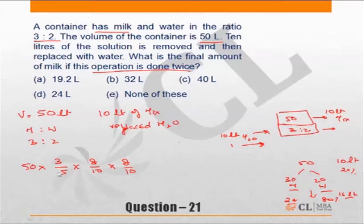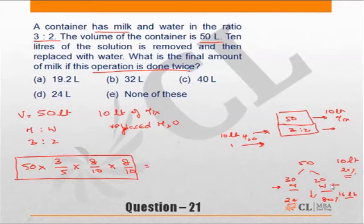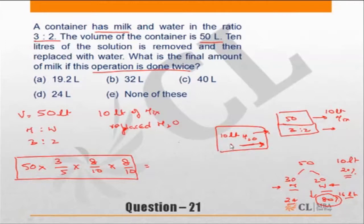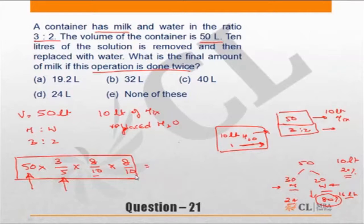This is the quantity of milk after two operations. The key point is that when you remove 20% of the mixture, you remove 20% of milk and 20% of water, leaving behind 80% of each. In every operation there is a reduction of 20%, or 80% is retained. Since you are adding water while no milk is being added, every time 20% of the milk is removed and 80% is retained. The final milk quantity equals: volume of mixture × fraction of milk originally × (8/10) × (8/10).